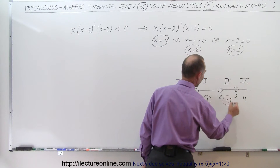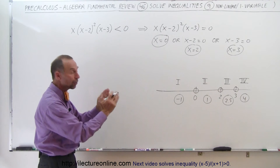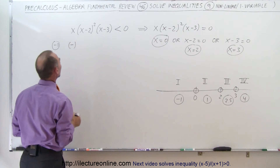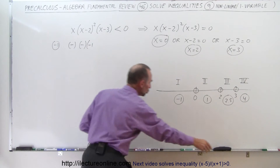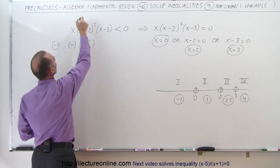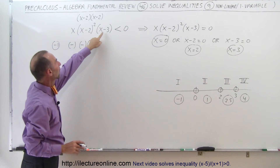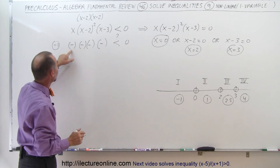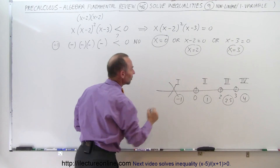Starting with negative 1 for Region 1: plugging it into X gives a negative number. Plugging it into (X minus 2) gives a negative number, but since it's squared, we count that factor twice — two negatives. Plugging into (X minus 3) gives negative 4, also negative. So we have four negatives multiplied together, which gives a positive result — not less than zero. It does not satisfy the inequality, so Region 1 is not part of our solution.